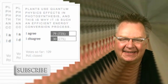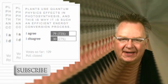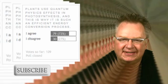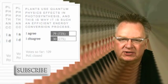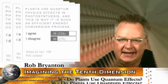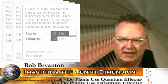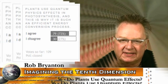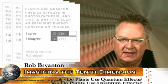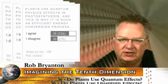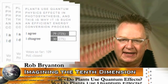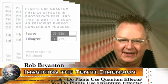Hi, it's Rob Bryanton and welcome back to the Imagining the Tenth Dimension video blog. More in our series of poll questions. This is a poll that ended on March 25, 2009. The poll question was, plants use quantum physics effects in photosynthesis, and this is why it is such an efficient energy conversion process. We asked if people agreed or disagreed. 72% agreed.